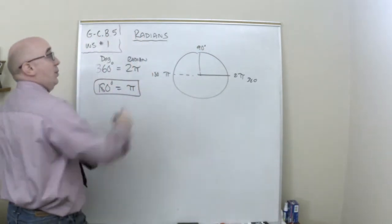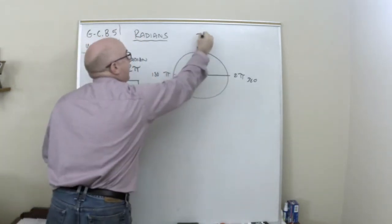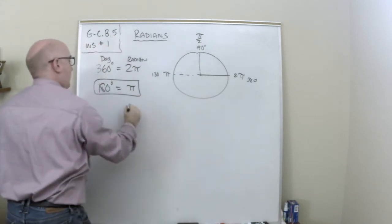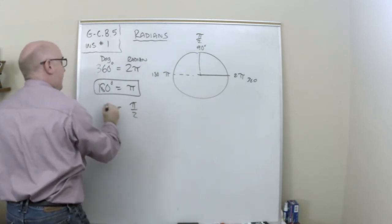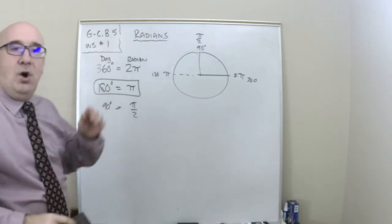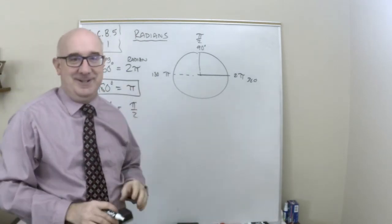Well, the answer to that is what's half of this number? Hey, it's pi over 2. Pi over 2 is 90 and so on. And we can do all kinds of conversions. Okay?